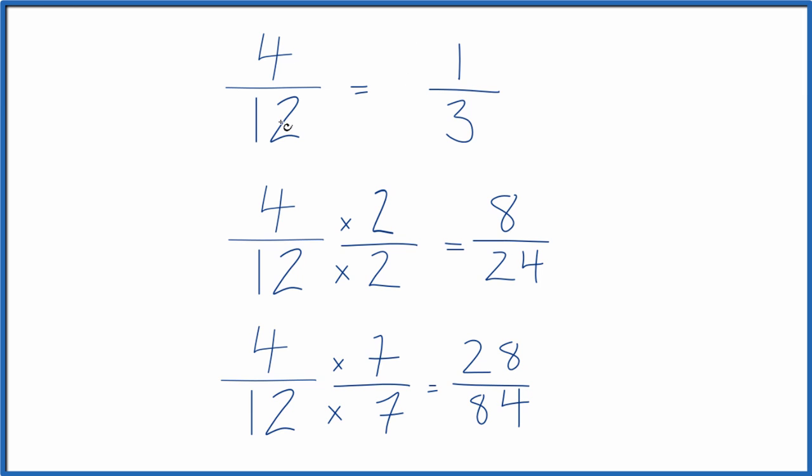So all of these, 4 twelfths, 1 third, 8 twenty-fourths, and 28 eighty-fourths, they are equivalent. They have the same decimal value.